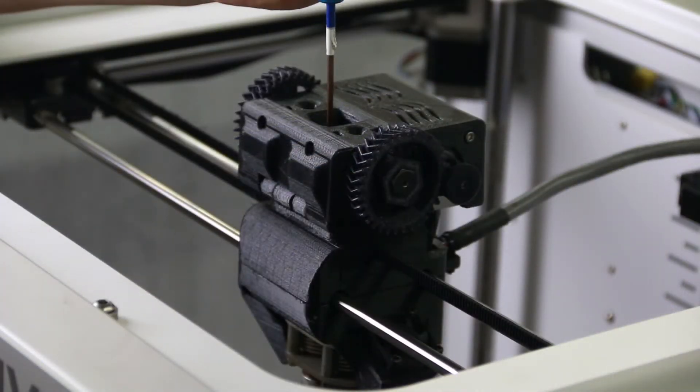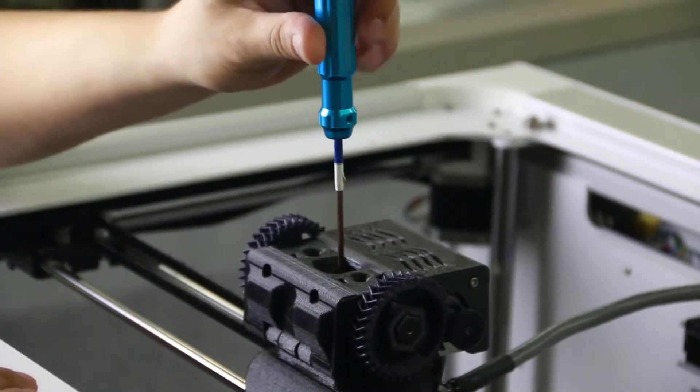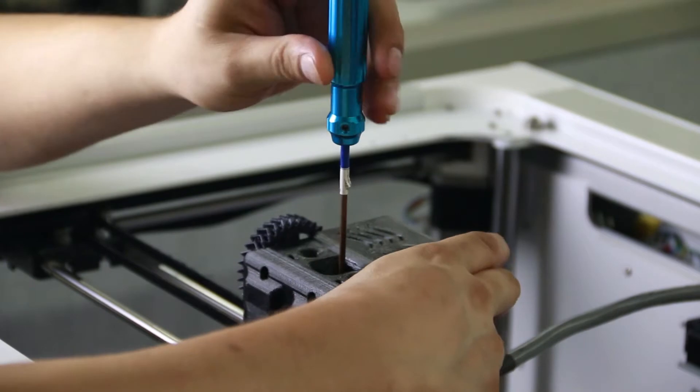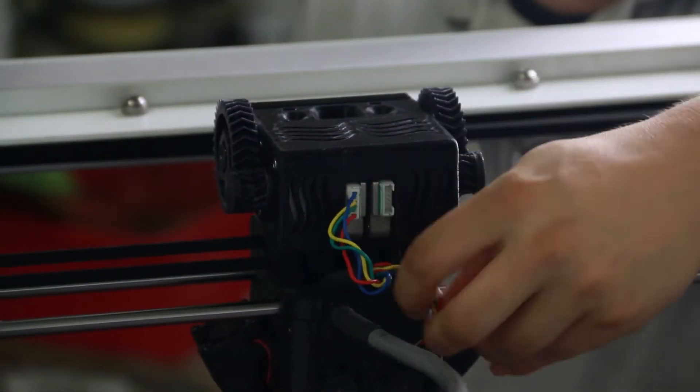Use a 2.5mm Allen wrench to remove the M3 socket head cap screw. Disconnect the motor harnesses.